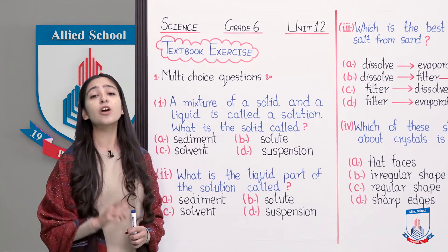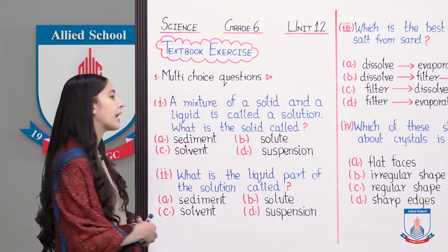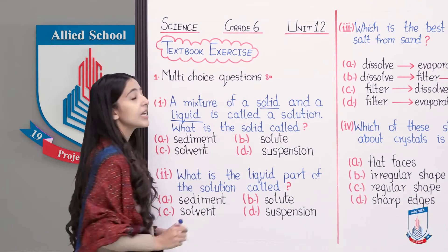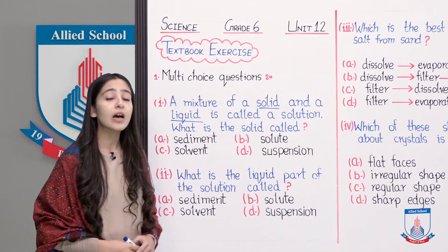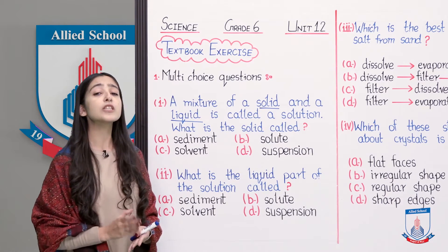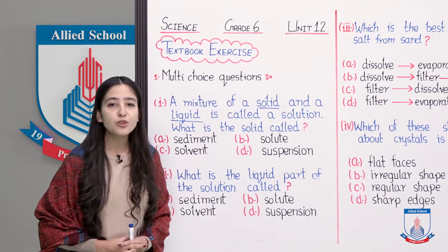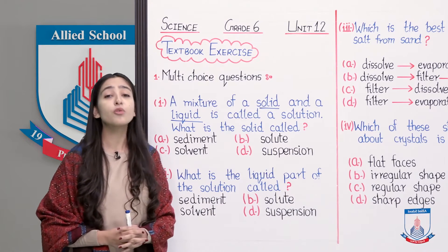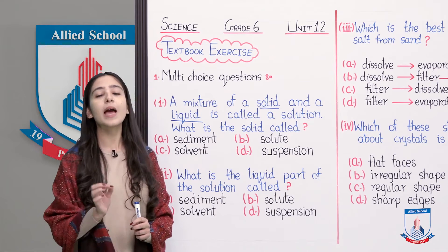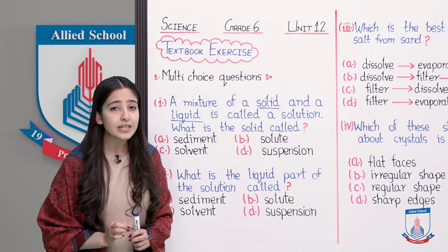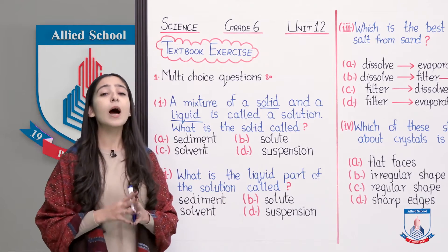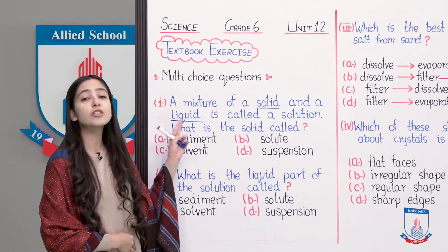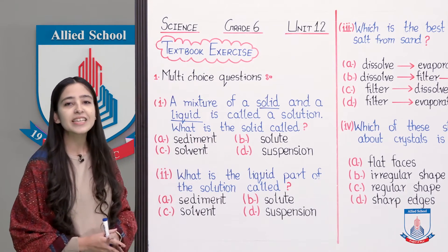Now here we have two things combined to make a solution. Number one is a solid and number two is a liquid. The question is: what do we call the solid? The solid particles that we dissolve in liquid are called solute. And the liquid in which we dissolve these solid particles is called solvent. So the solid particles are called solute and the liquid portion of the solution is called solvent.